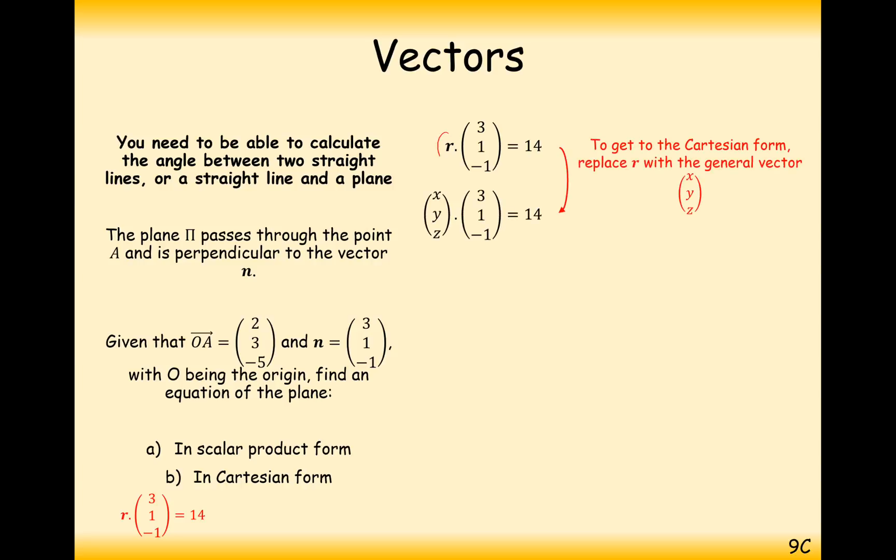We can always replace r with x, y, z. And do the dot product of it. So 3 times x, 1 times y, minus 1 times z, and set that equal to 14. And that's now the Cartesian form.